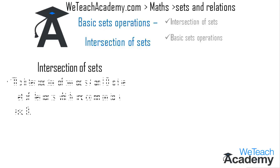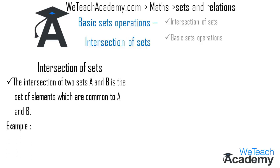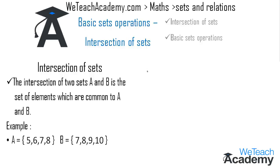The intersection of two sets A and B is the set of elements which are common to both A and B. Let me explain this concept with an example. We have set A equal to {5, 6, 7, 8} and set B equal to {7, 8, 9, 10}. We use the ∩ symbol to denote the intersection of two sets.